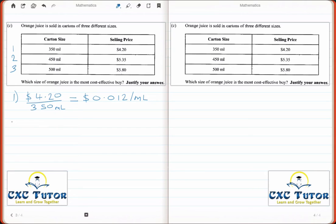For juice number two, it costs us $5.35 and contains 450 milliliters. Therefore, its cost per milliliter is equal to $0.0119 per ml.